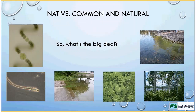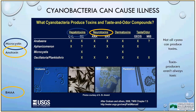These organisms are native to Vermont, common, and natural — so why are we talking about them? It's because cyanobacteria in some cases can produce very potent toxins that are harmful to humans and animals. Not all cyanobacteria are able to produce these toxins — they may not have the genes to do so, and even if they have the genes, those genes may not be turned on. It's not possible to look at cyanobacteria with your eyes or under a microscope and tell whether toxins are present. Because of this, we recommend avoiding contact with all cyanobacteria.